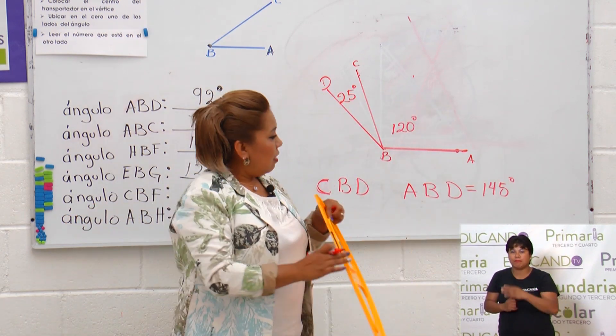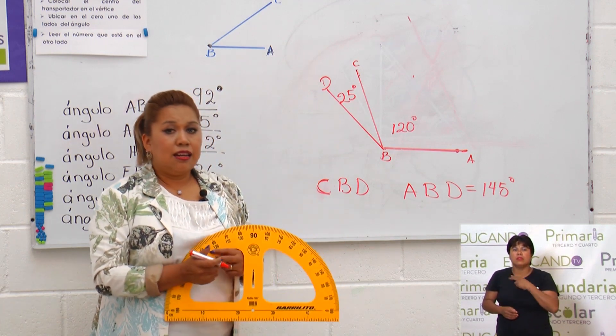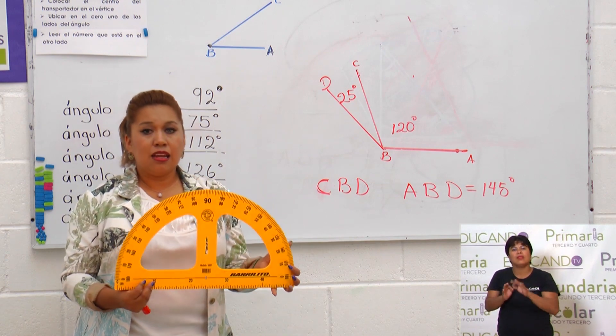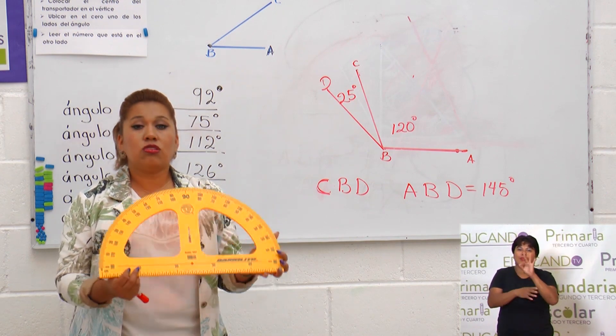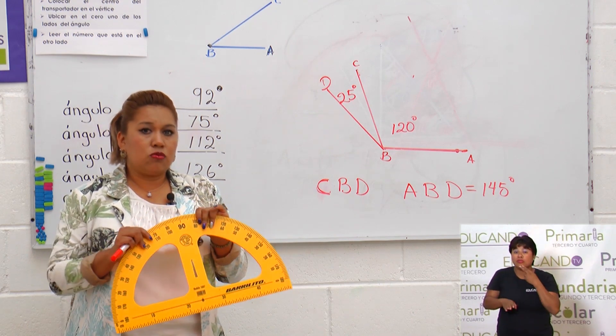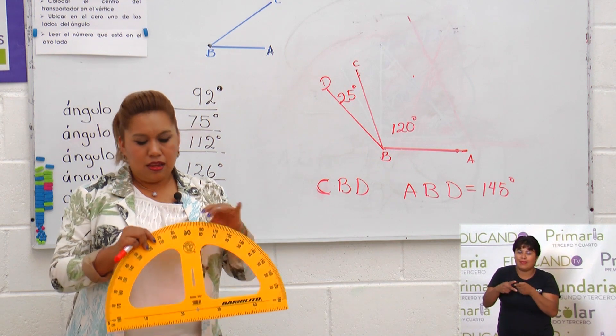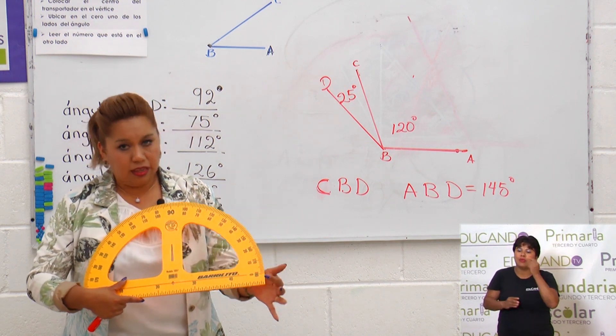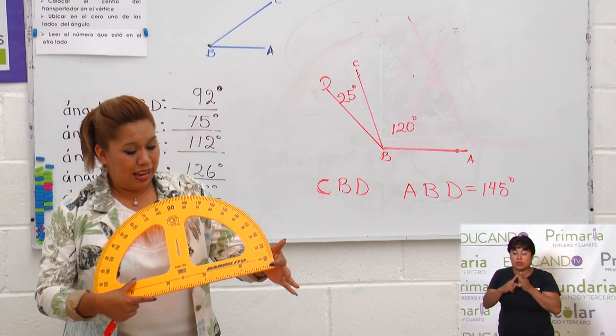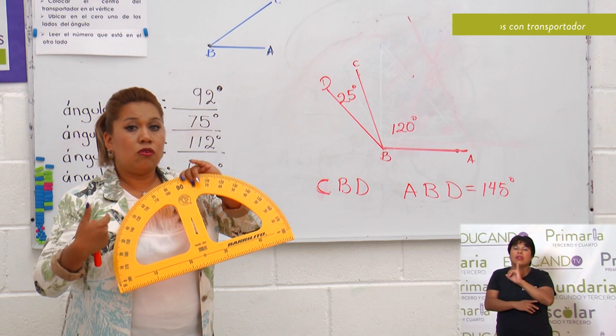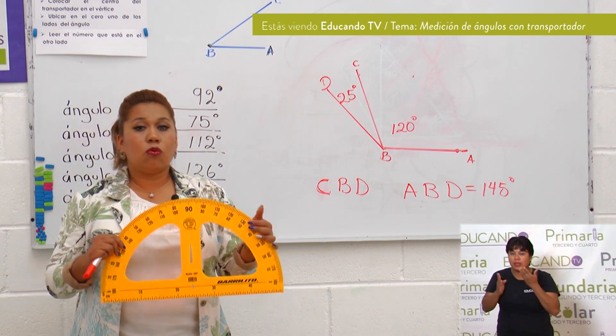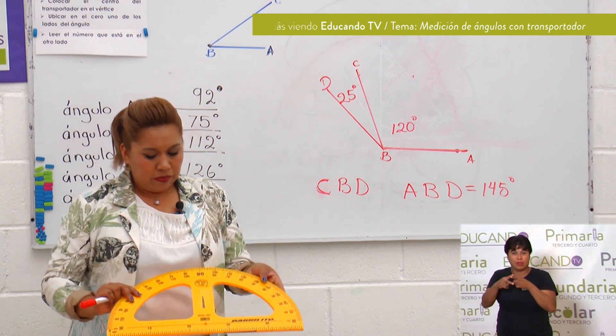Muy bien. Pues para eso siempre debemos de utilizar el transportador, que es el instrumento que nos permite medir los grados, los ángulos. Y es importante que tú sepas cómo utilizarlo, porque si no, darías una referencia mal del ángulo, ¿verdad? Por ejemplo, que no sepas de dónde partir, si del cero o de cualquier número. Si no sabes contar, que si va hacia el lado derecho o si va hacia el lado izquierdo. Y eso es muy importante que tú veas antes de marcar un ángulo.